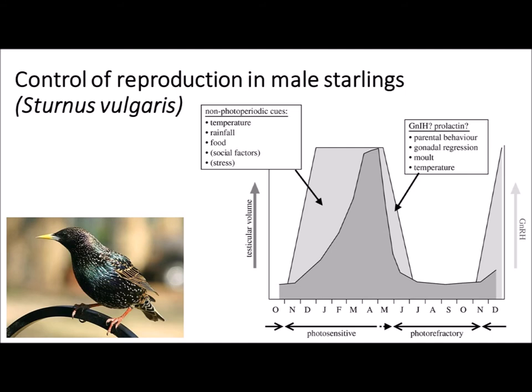Moult is when a bird changes one set of feathers for another. That's a very energy costly, very demanding time of year. Consequently it makes sense that hormones linked to reproductive behaviours would decline to reduce the chances of the bird attempting to breed at a time of its life cycle when it needs to be putting more energy and effort into maintenance behaviours — i.e. feeding to get lots of energy to grow a new plumage, which it can then use as part of its reproductive behaviours in the following year. So this graph shows the complexity of all of the variables that impact on whether or not a starling will breed, and whether or not the starling's physiology will alter to enable reproduction, not just on the endocrine level but also of external factors too.